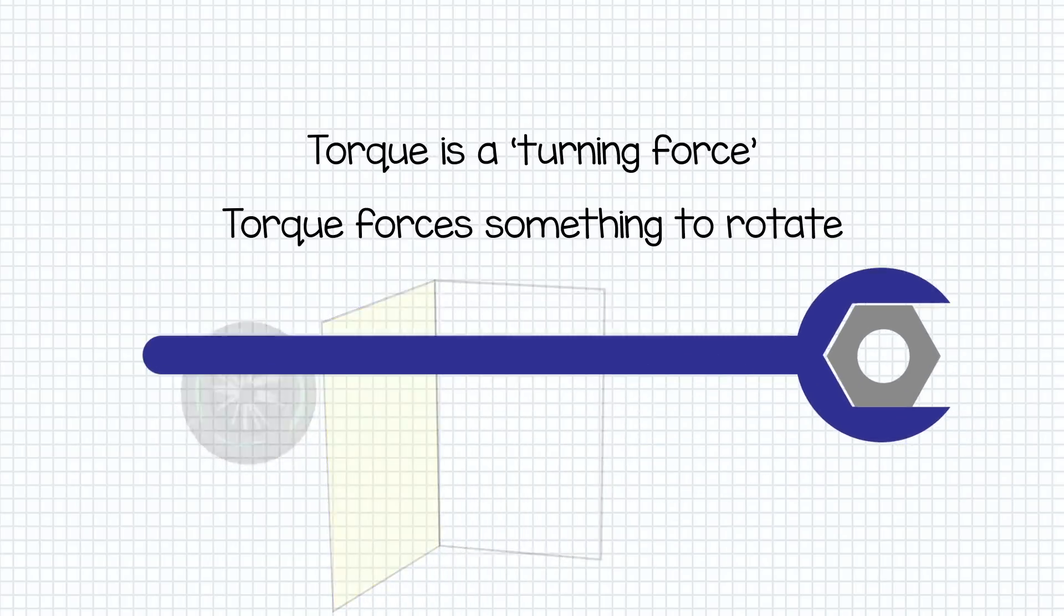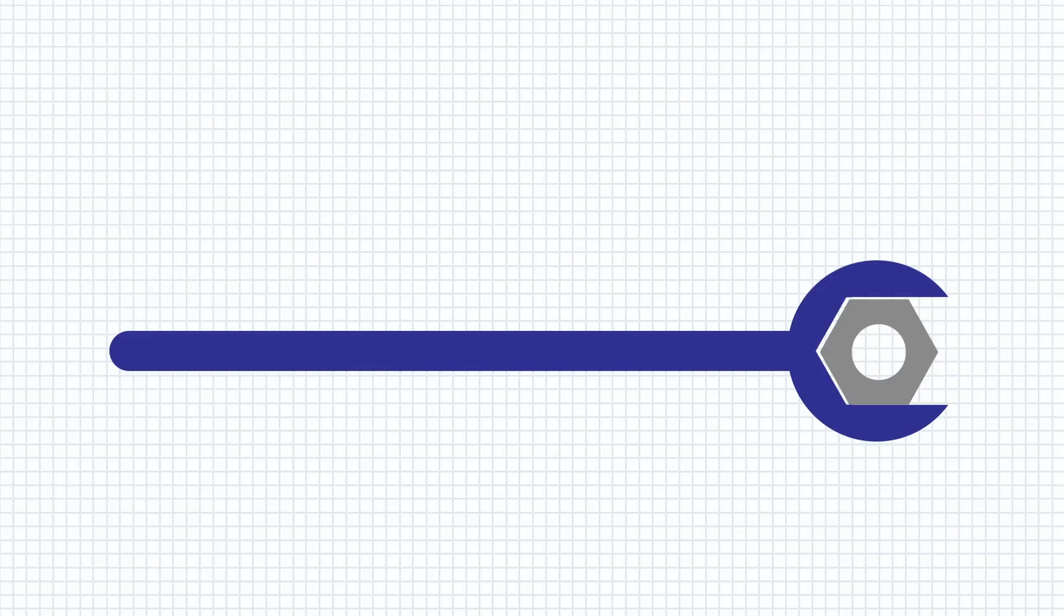In fact, let's imagine this nut for a second to better understand torque. Let's imagine the nut is on pretty tightly and we're trying to undo it with a spanner. Let's use a really long spanner for reasons we'll see in a second. The amount of torque applied is measured by taking the distance from the pivot point at which you're applying the force and multiplying it by how much force you're putting in.